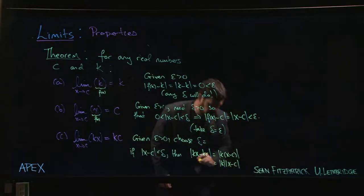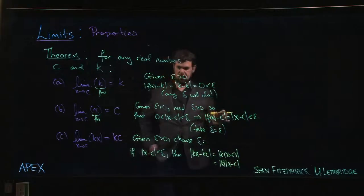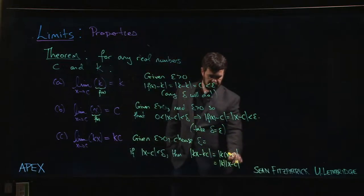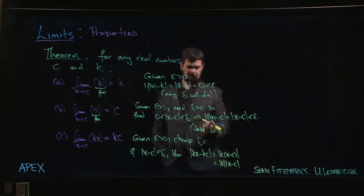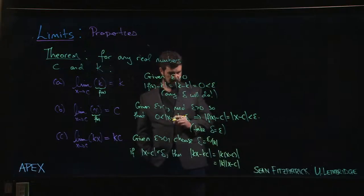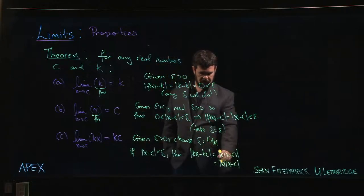So what should we choose for our delta? We want this to be less than epsilon. We know this part is less than delta, so let's take delta to be epsilon divided by the absolute value of k. Then absolute value of k times this will be less than absolute value of k times delta, which is epsilon.